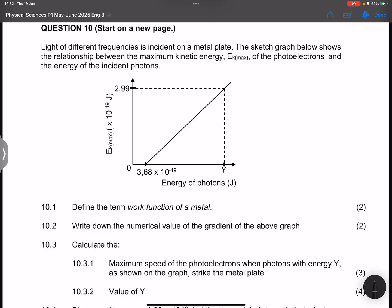Now they say to us, describe the term work function of a metal. I want you guys to please remember that when we talk about the work function, we say this is the minimum energy that is required to emit electrons from a metal surface. Please remember your definitions.